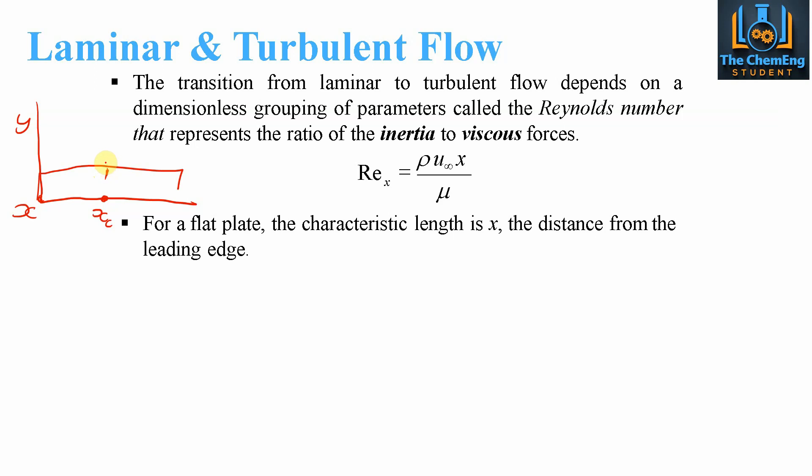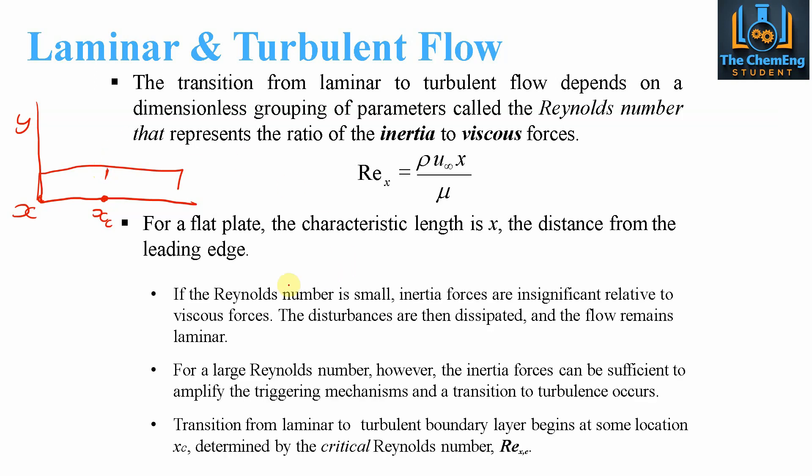For the flat plate, if the Reynolds number is small, the inertial forces are significant relative to the viscous forces, so disturbances can be dissipated and the flow remains laminar. Up to a certain value of Reynolds, the inertia forces become sufficient and can amplify and trigger mechanisms for the transition to turbulent flow. This transition is denoted by the distance xc, which gives us our critical Reynolds number.